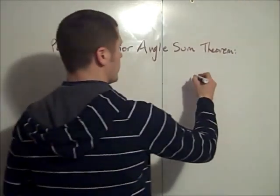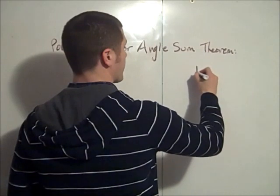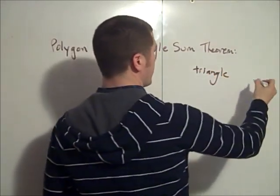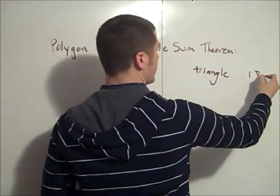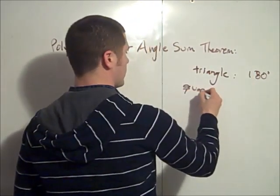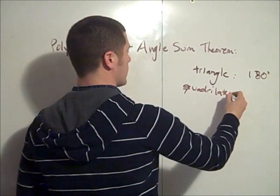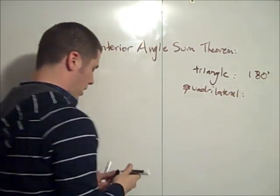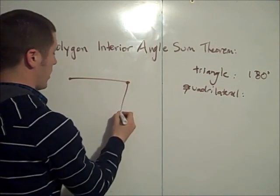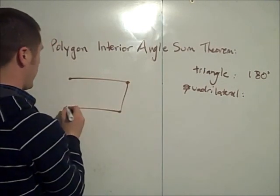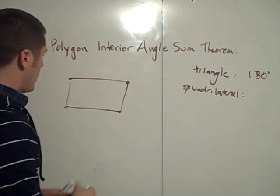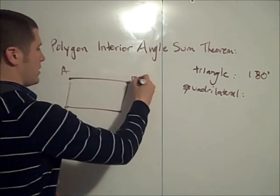So we know for a triangle that the sum is 180 degrees. What about a quadrilateral? A 4-sided polygon. Think about any 4-sided polygon you want — we just want it to be convex. So we have this 4-sided polygon, and let's just call it ABCD.